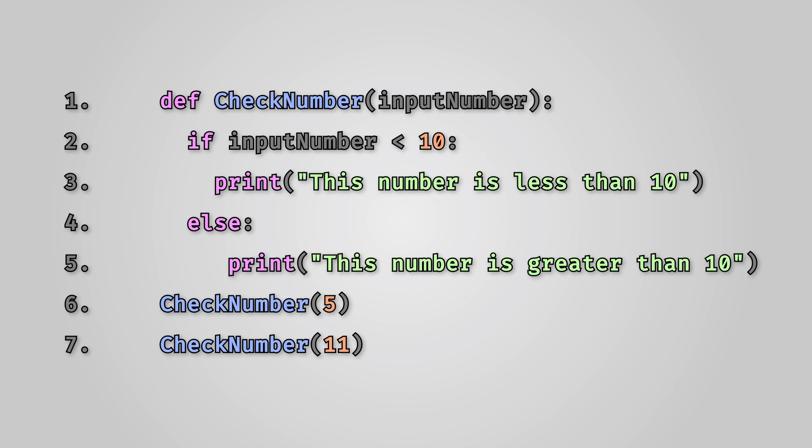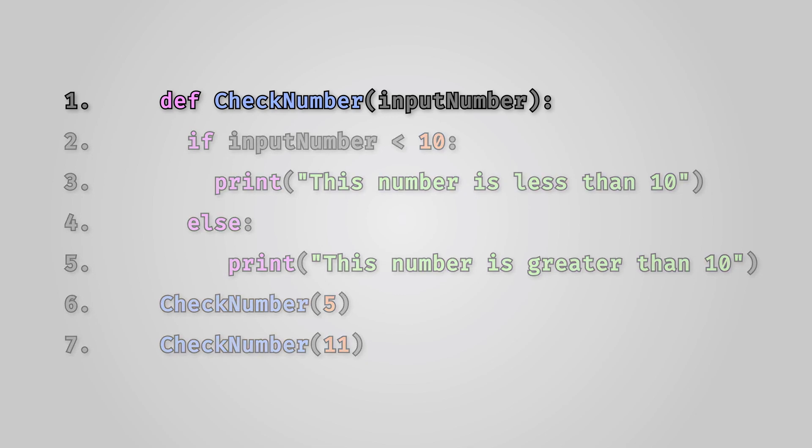Let's look through this Python code line by line. We first create our procedure giving it the name check number. We have given this procedure a single parameter called input number.